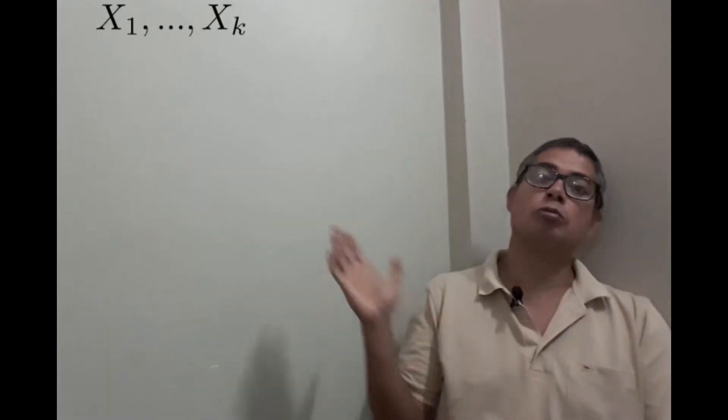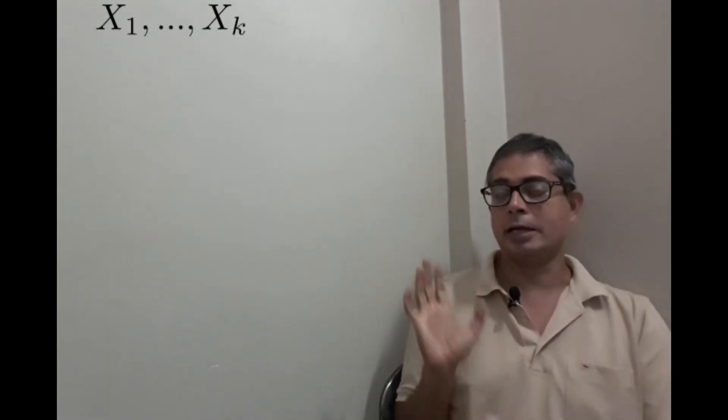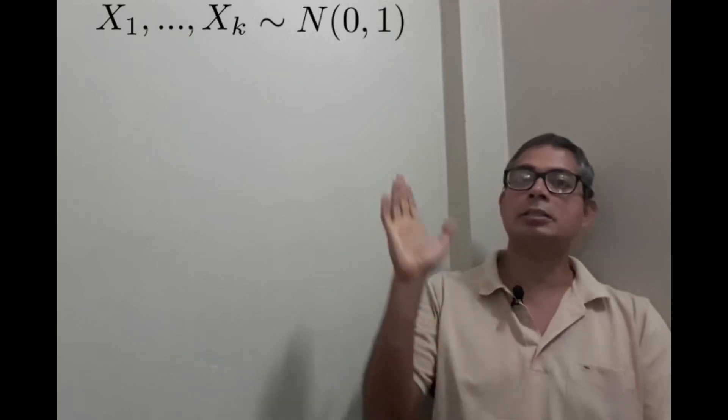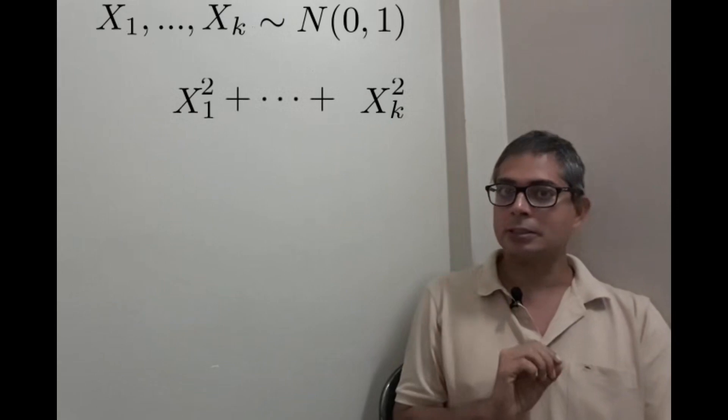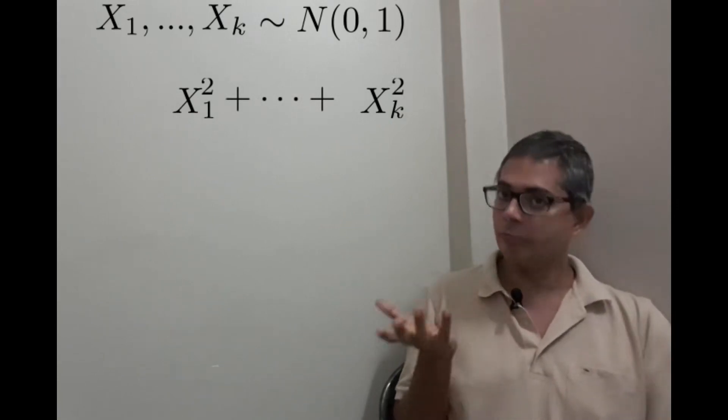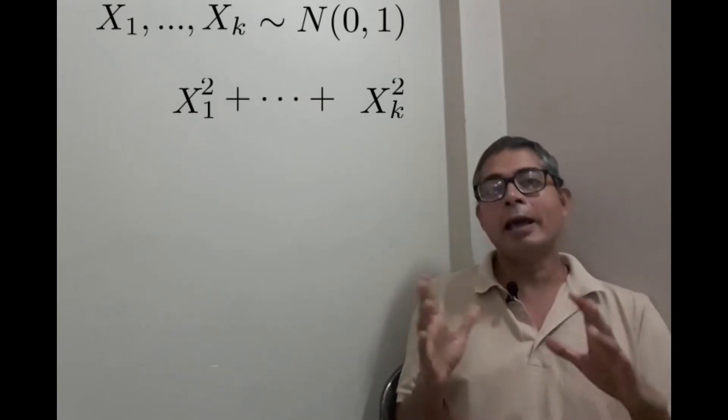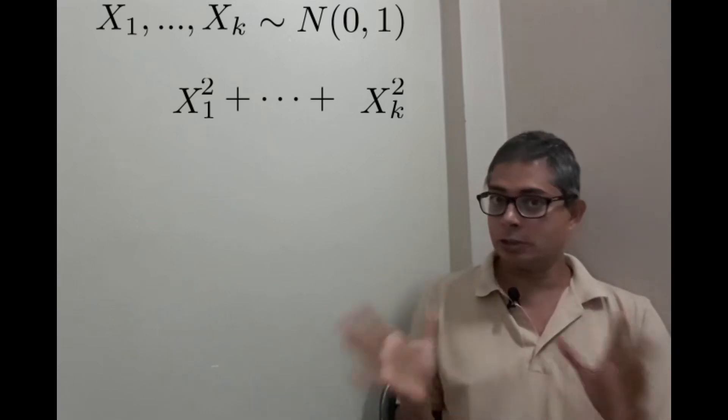If we have k random variables X₁ to Xₖ that are all iid standard normal, then the sum of their squares is again a random variable. Now every random variable has a distribution.